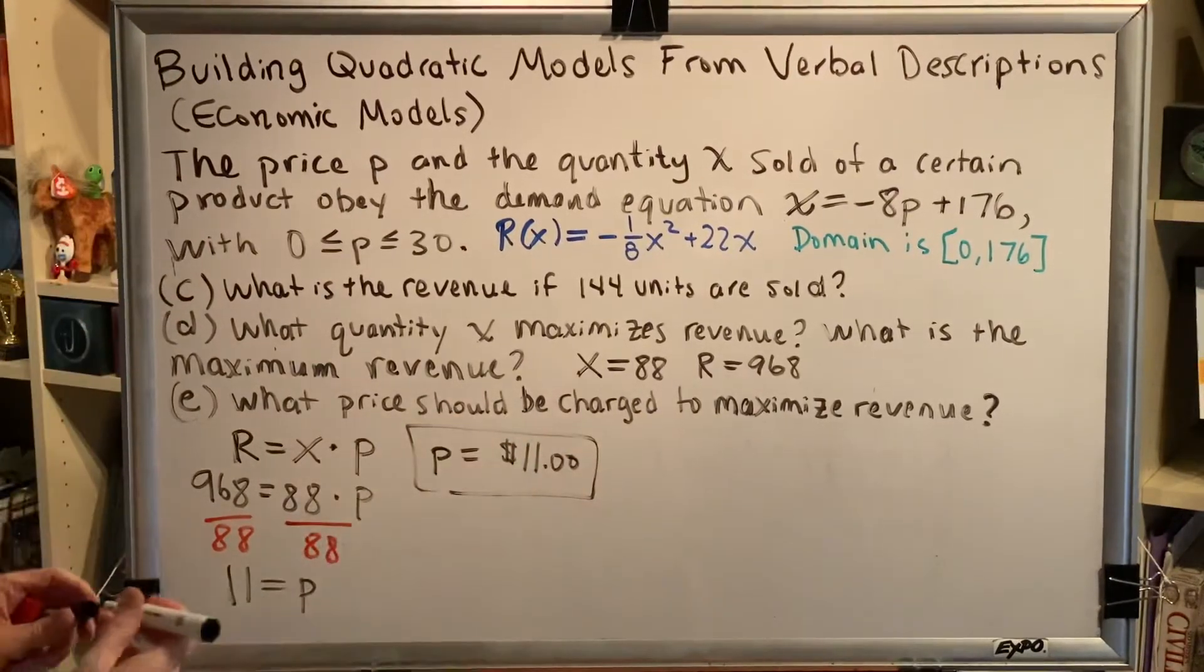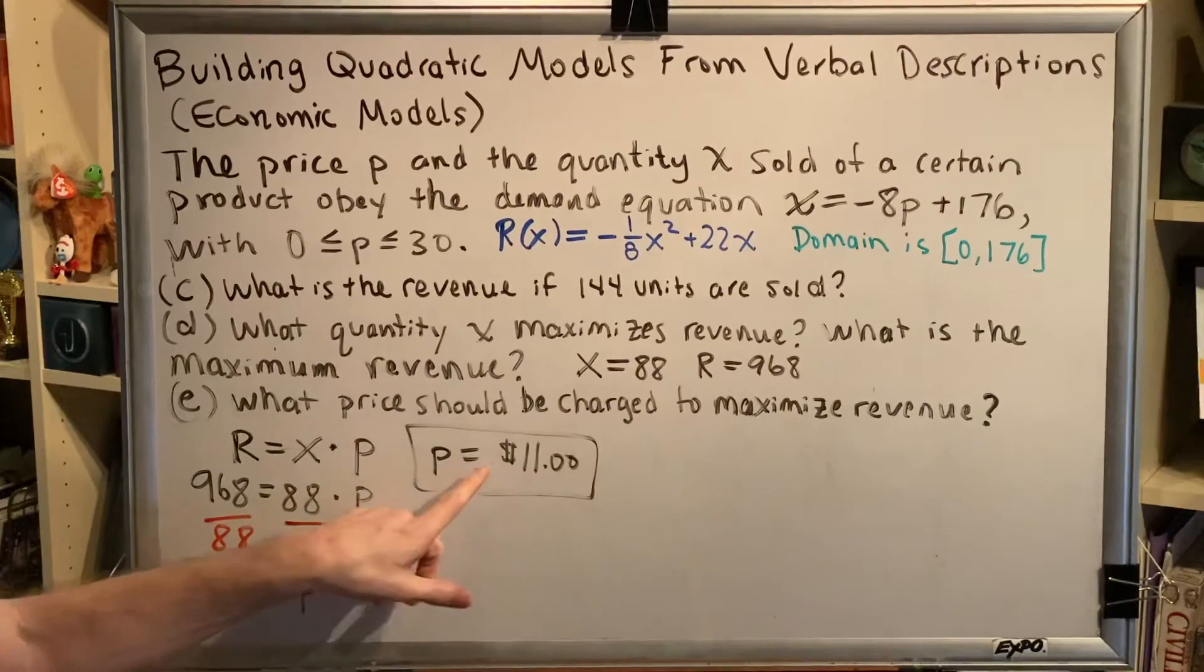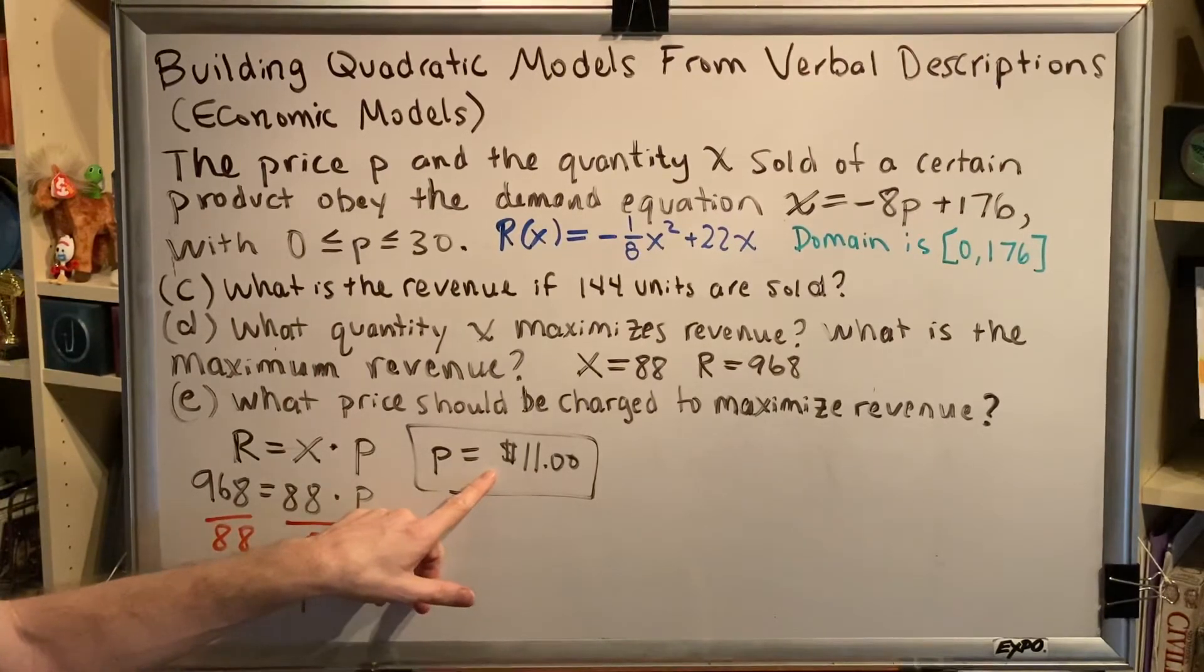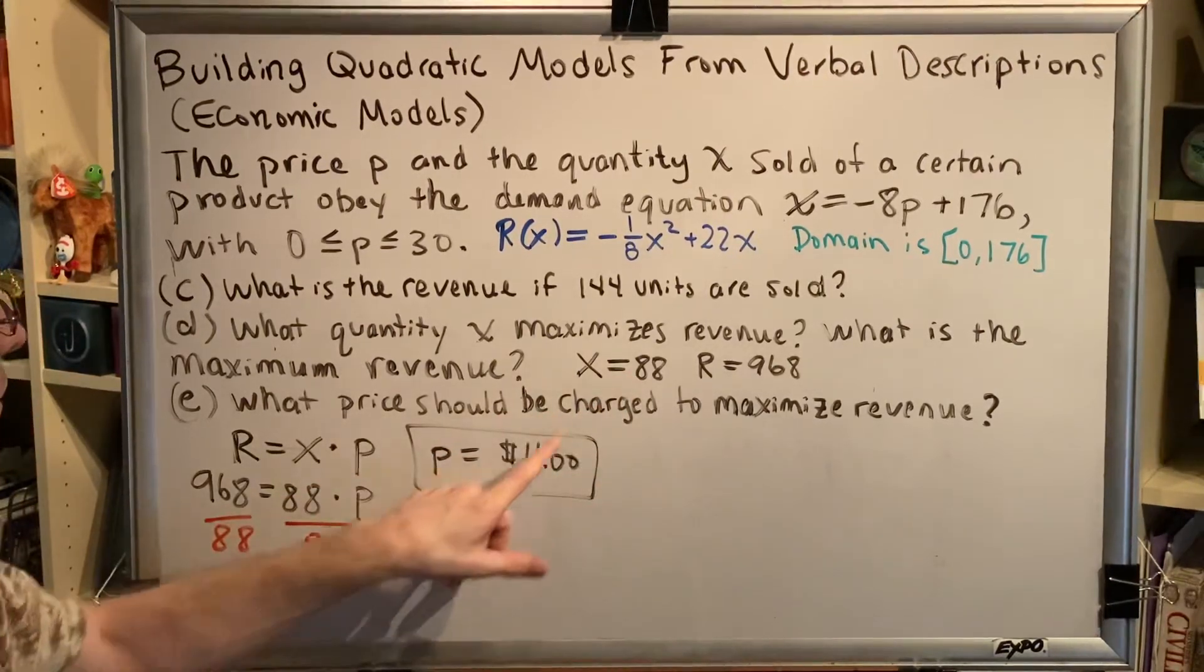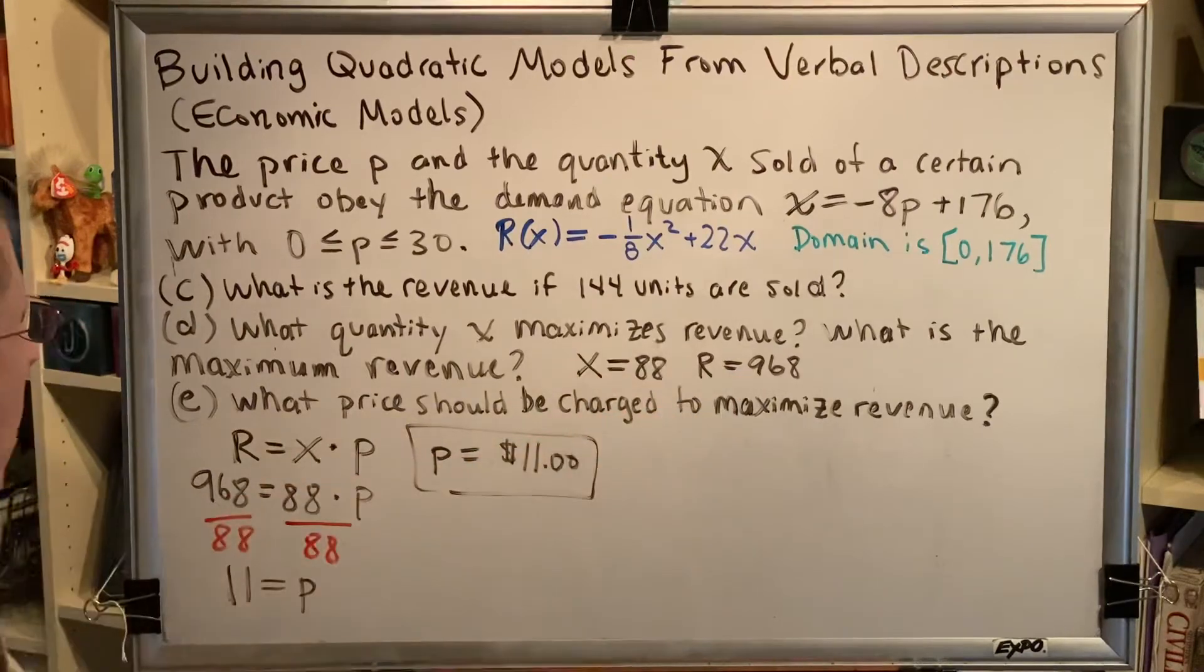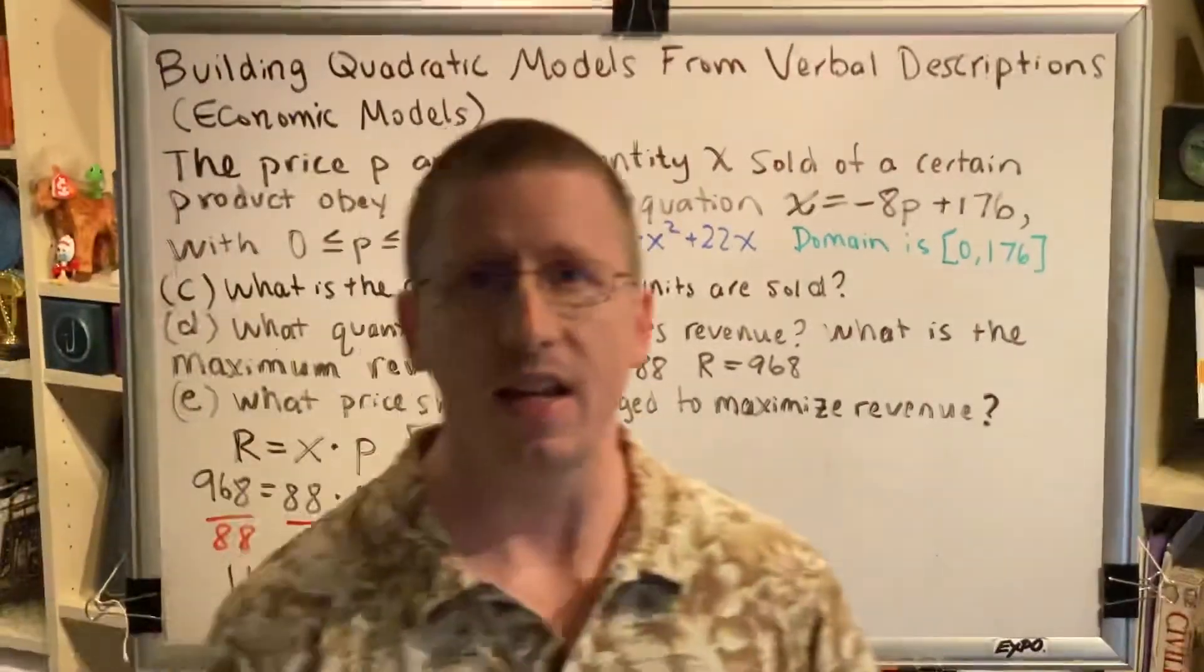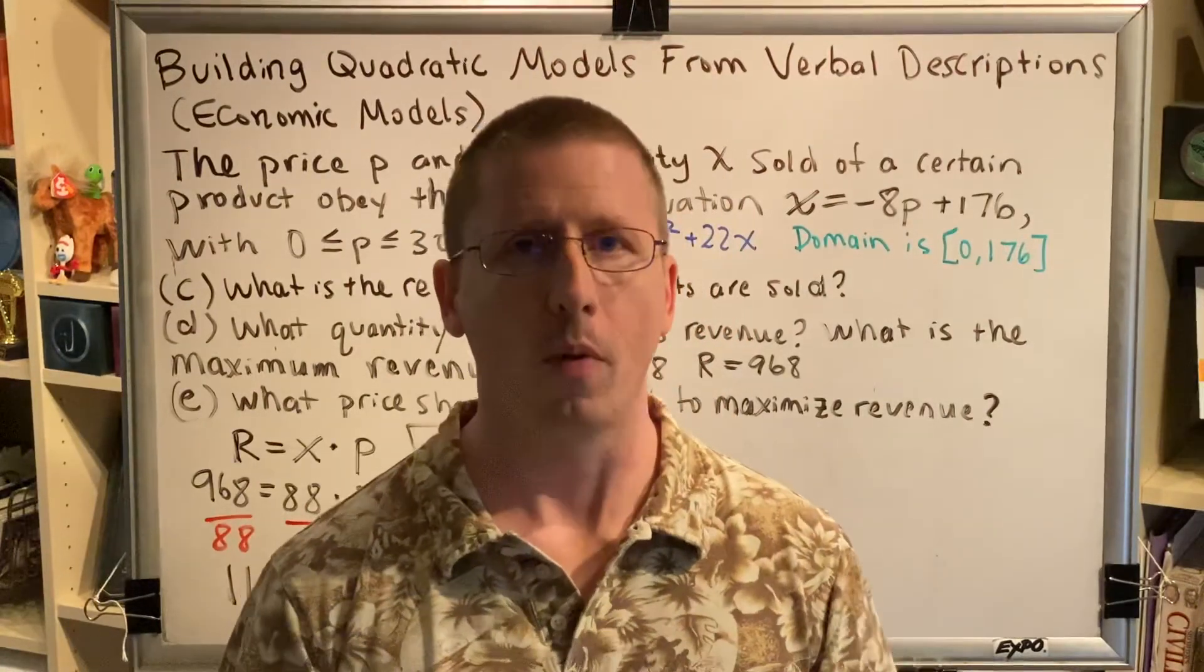Okay, let's put all of this together. When you charge $11, the number of units of the product you will sell is 88. And the amount of money you will bring in is 11 times 88, which is $968. This now concludes parts C, D, and E. We will do part F in the next video. Thank you.